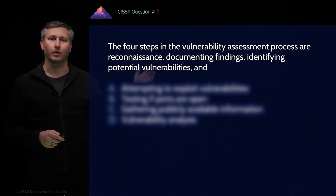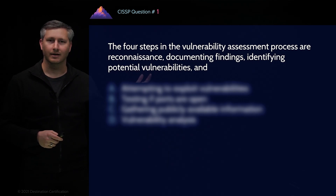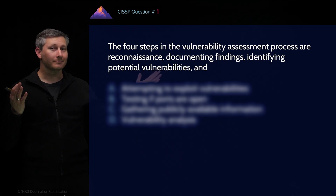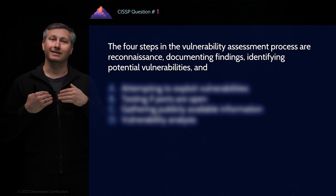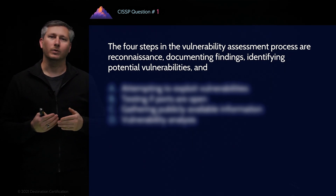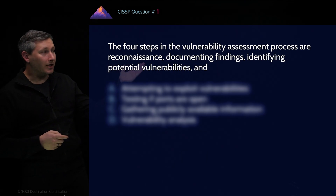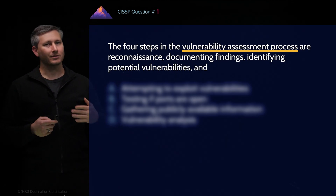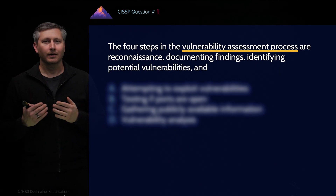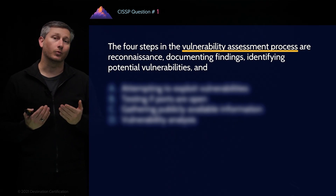The four steps in the vulnerability assessment process are reconnaissance, documenting findings, identifying potential vulnerabilities, and question mark. To help us understand this question and be able to identify the best answer, we need to simplify this question and identify the key words. The major key words here are 'vulnerability assessment process.' This question is obviously asking us about this process, but there's a lot more to dissect here, because the question is giving us three of the steps and asking us which one is missing.